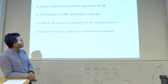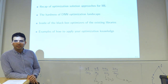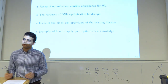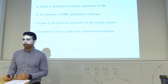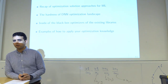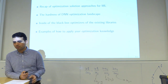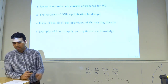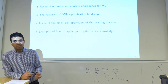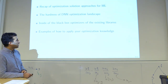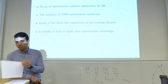We will see the hardness of the deep neural network optimization landscape, and cover some of the techniques used in existing libraries. Whenever you call a solver to run your deep neural network, we'll explain what is actually inside it and the main reason behind those solvers. Finally, we'll look at an example of how to apply optimization knowledge to training deep neural networks.